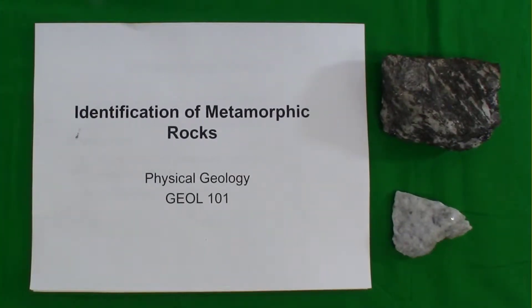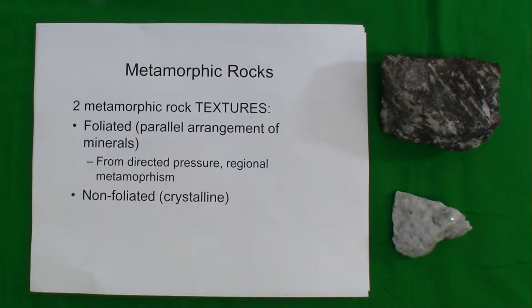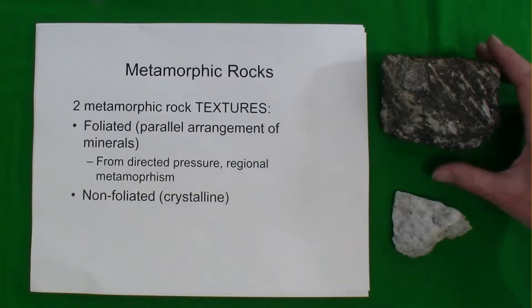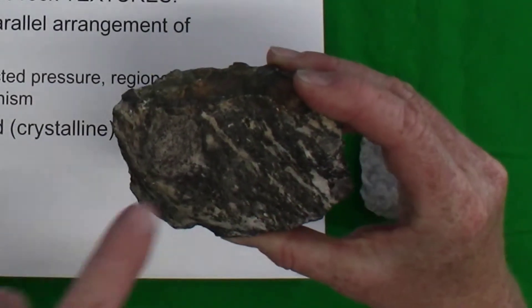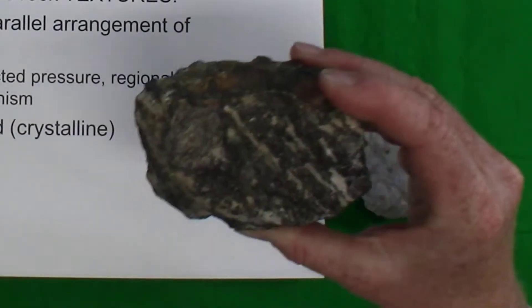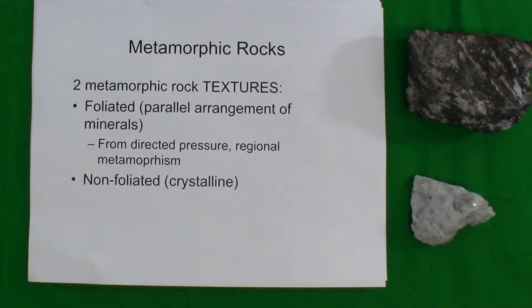This is a tutorial on the identification of metamorphic rocks for physical geology. Metamorphic rocks have different textures. The two primary textures are foliated metamorphic texture, where the minerals have a parallel alignment. This is usually caused by directed pressure at regional metamorphism at a convergent boundary.